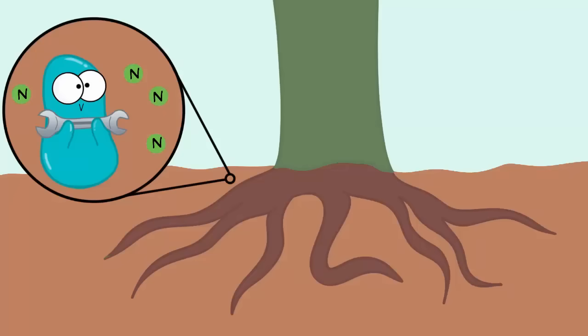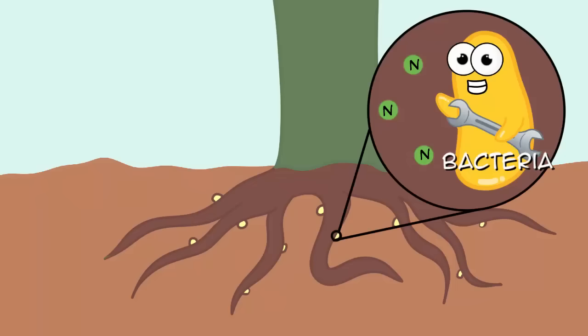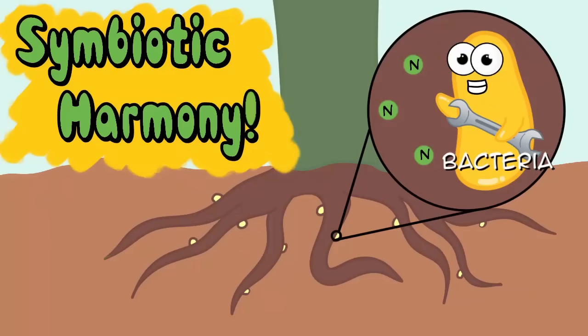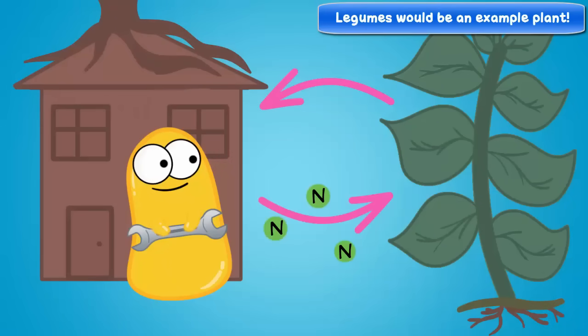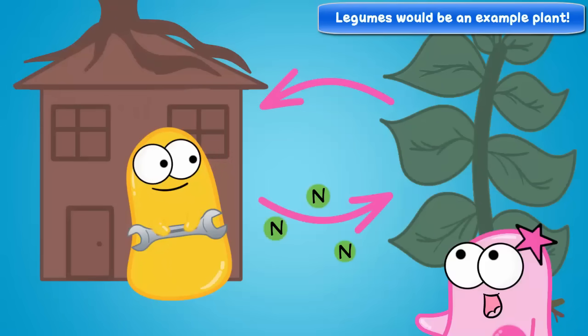Nitrogen can be fixed by bacteria, which could be living in the soil or even in the roots of some types of plants, where the bacteria live in symbiotic harmony inside the roots. The bacteria get a home in the plant root and the plant gets the benefit of this fixed nitrogen. Keep in mind, we're just looking at one pathway here in the nitrogen cycle — this is just one way for nitrogen to cycle.